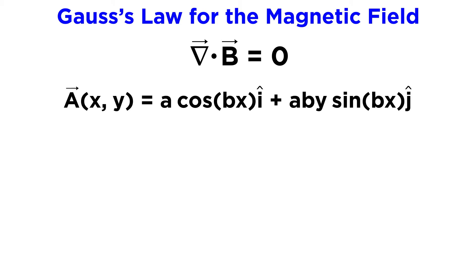Given the following expression for a vector field, let's determine whether the field could be a magnetic field. Let's think for a moment about the best way to do this. Remember, Gauss's law tells us that the divergence of the magnetic field is zero. Therefore, the simplest thing to do is to take the divergence of the given expression and see if it goes to zero.